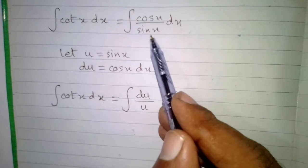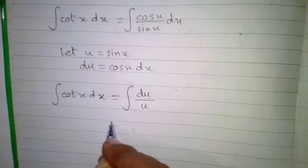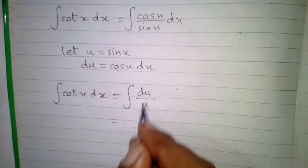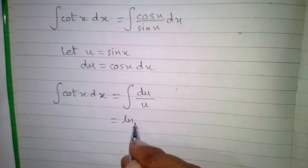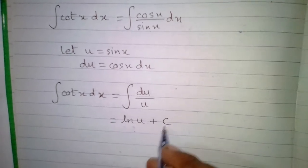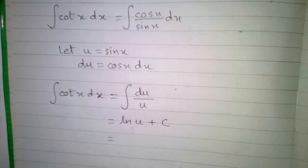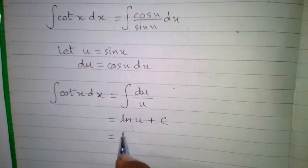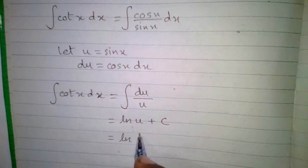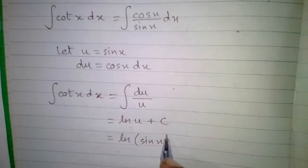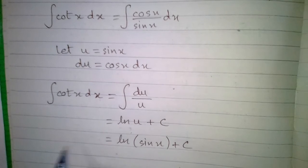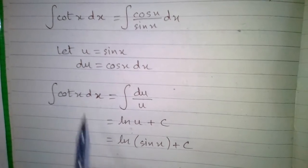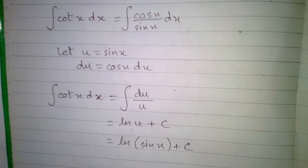We know that the integral of du upon u is ln u plus C where C is the constant. We will put the value of u over here so we have ln sine x plus C. So the integral of cot x dx is equal to ln sine x plus C.